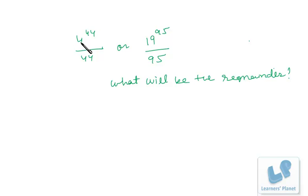Obviously the numbers are very big and the divisors are also very big, so you cannot go for direct division. This type of problem is very frequently asked in CAT examinations. To solve this sort of problem you need to be algebraically and logically clear.